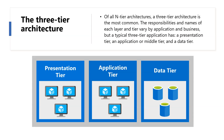The application tier typically focuses on handling the business logic of the application. This could be handling a customer order, tracking a shipment, or updating inventory based on materials received. This tier is also responsible for create, read, update, delete activities against the data tier, and is a good location to make calls to dependent services such as external APIs.